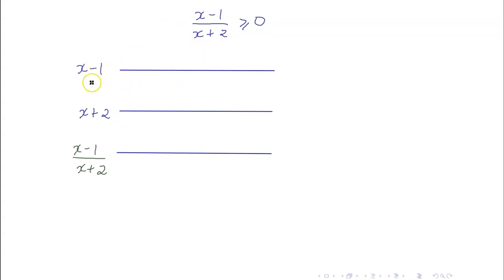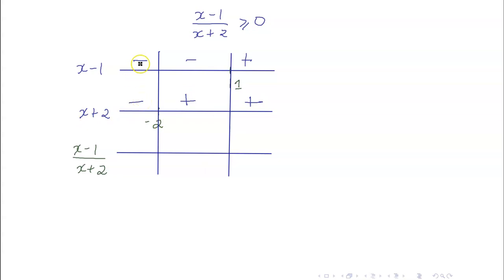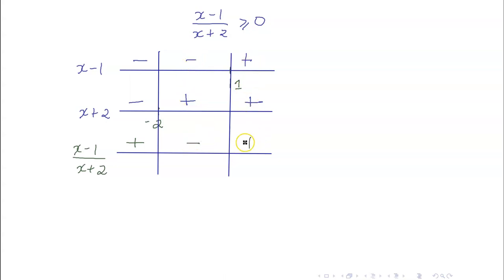Here are my number lines for my factors. x minus 1 is 0 at x equals 1; x plus 2 is 0 when x is negative 2. We divide the number lines at these points. x minus 1 is positive to the right of 1 (positive coefficient). x plus 2 is positive to the right of negative 2. Therefore, the quotient is negative times negative — that's positive, then 1 negative, so negative, then 2 positives, so positive.